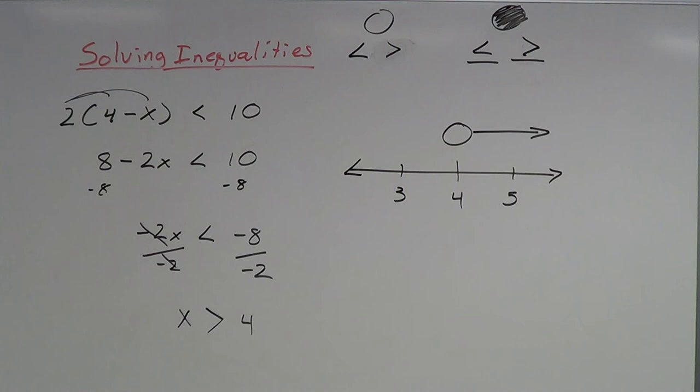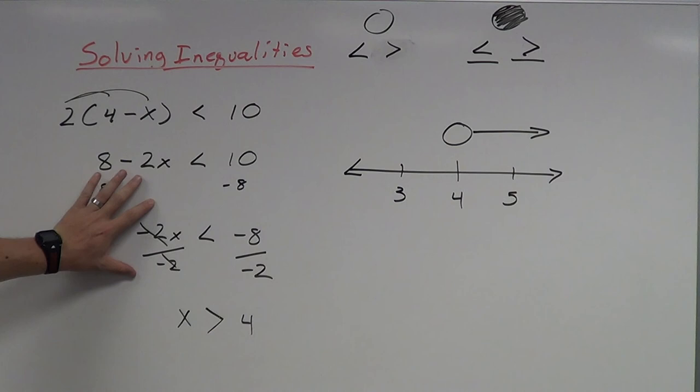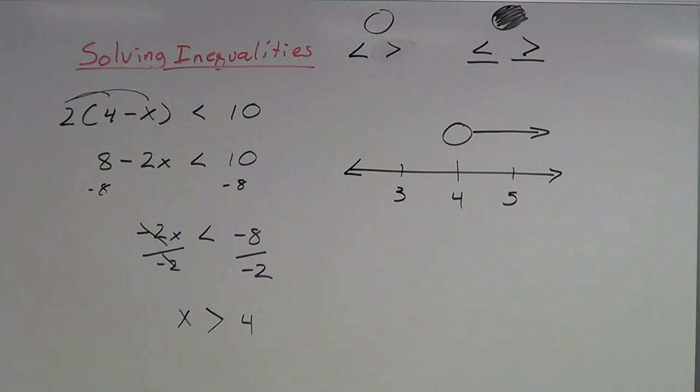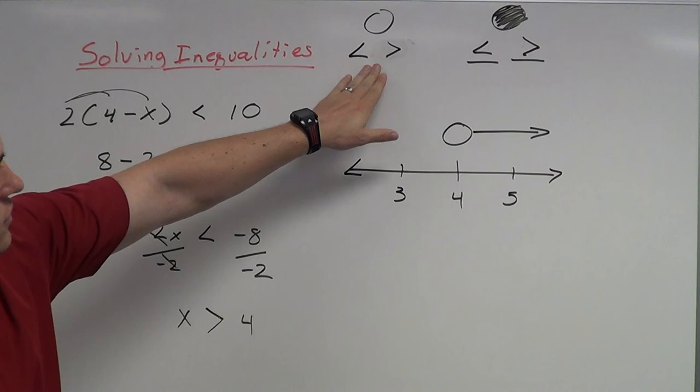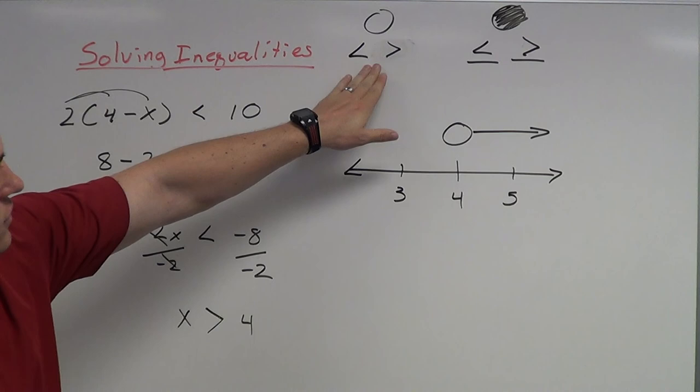That is solving and graphing inequalities, with a short explanation of all the solutions we're getting. A couple of things to remember: you solve inequalities just like normal equations. If you multiply or divide by a negative number, you must flip your inequality symbol. And when graphing, use an open circle with less than or greater than, and a closed circle with less than or equal to or greater than or equal to. Just a couple of things to remember.